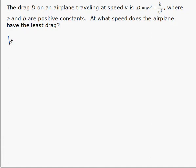So our primary equation has to be for the thing we want to minimize. In this case, our primary equation is for drag, which we're given: a v squared plus b over v squared.